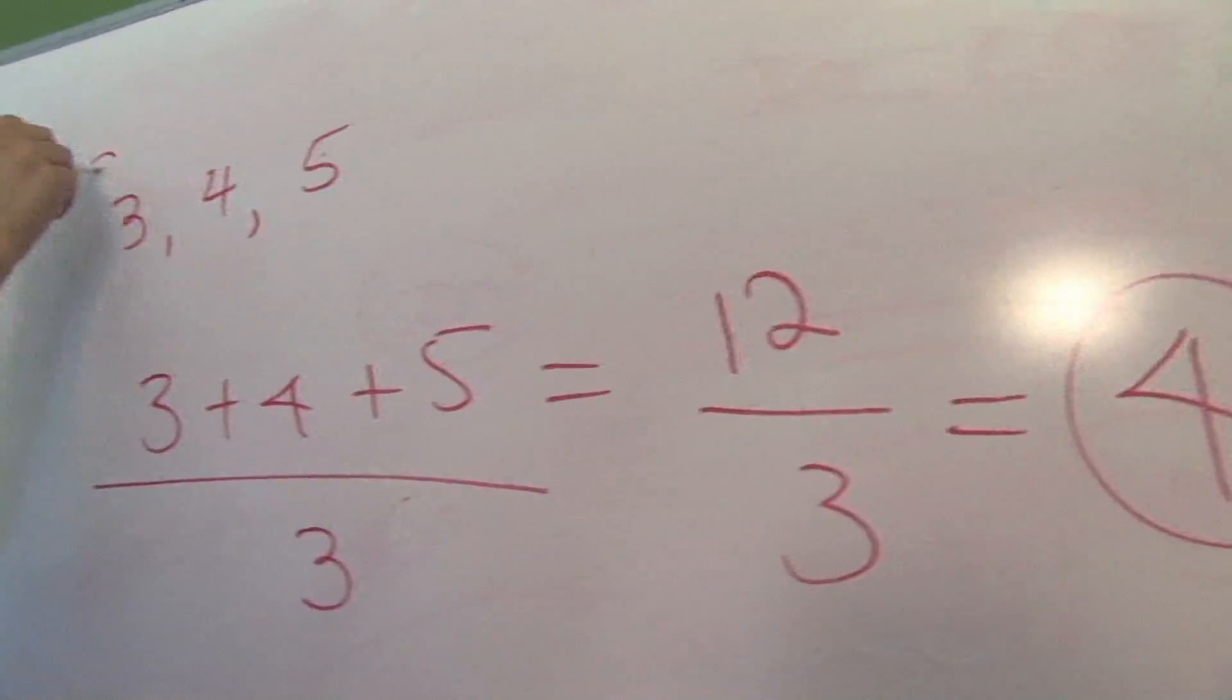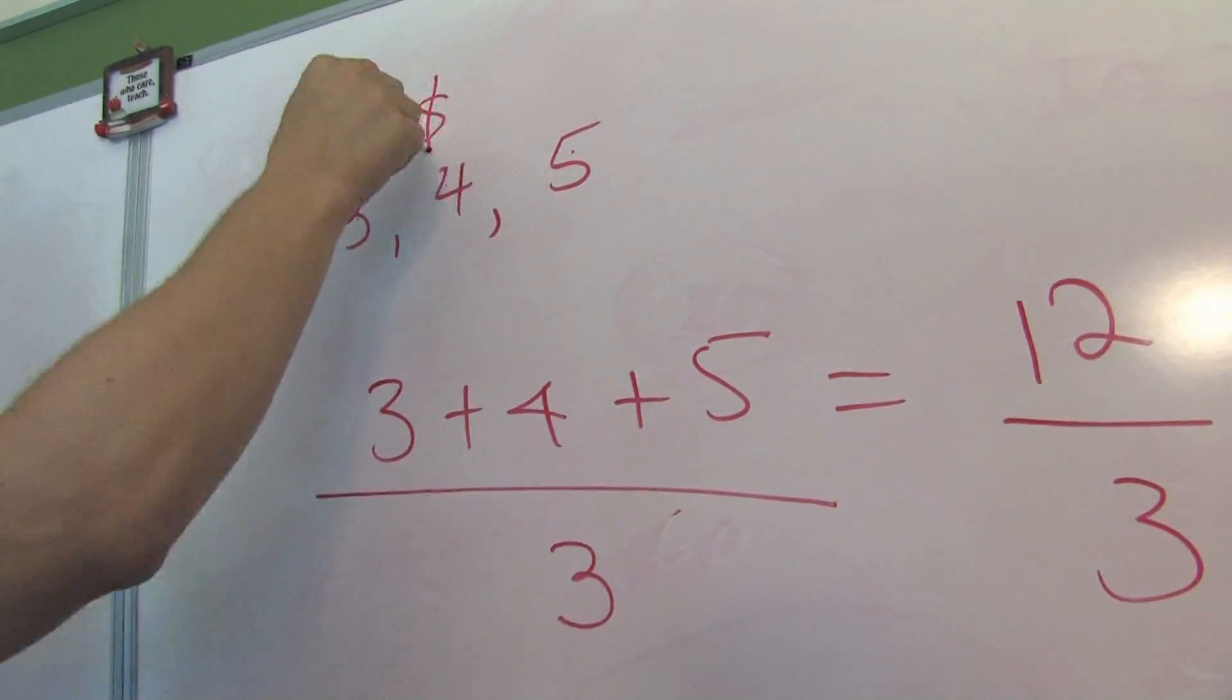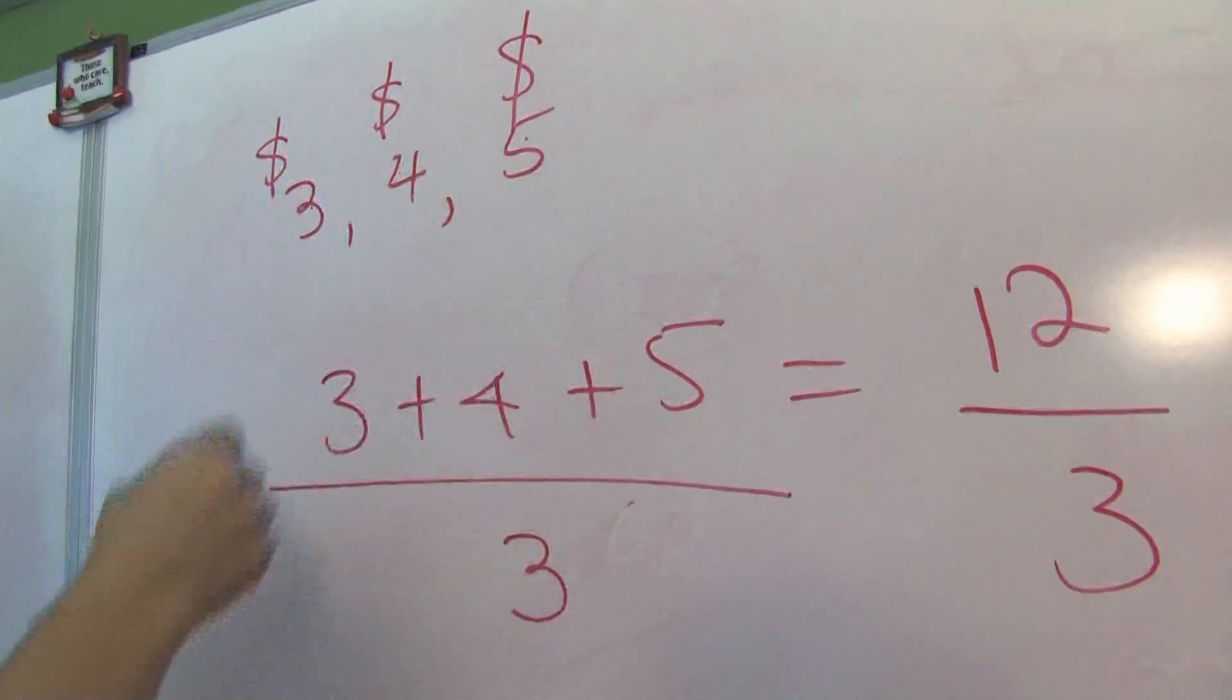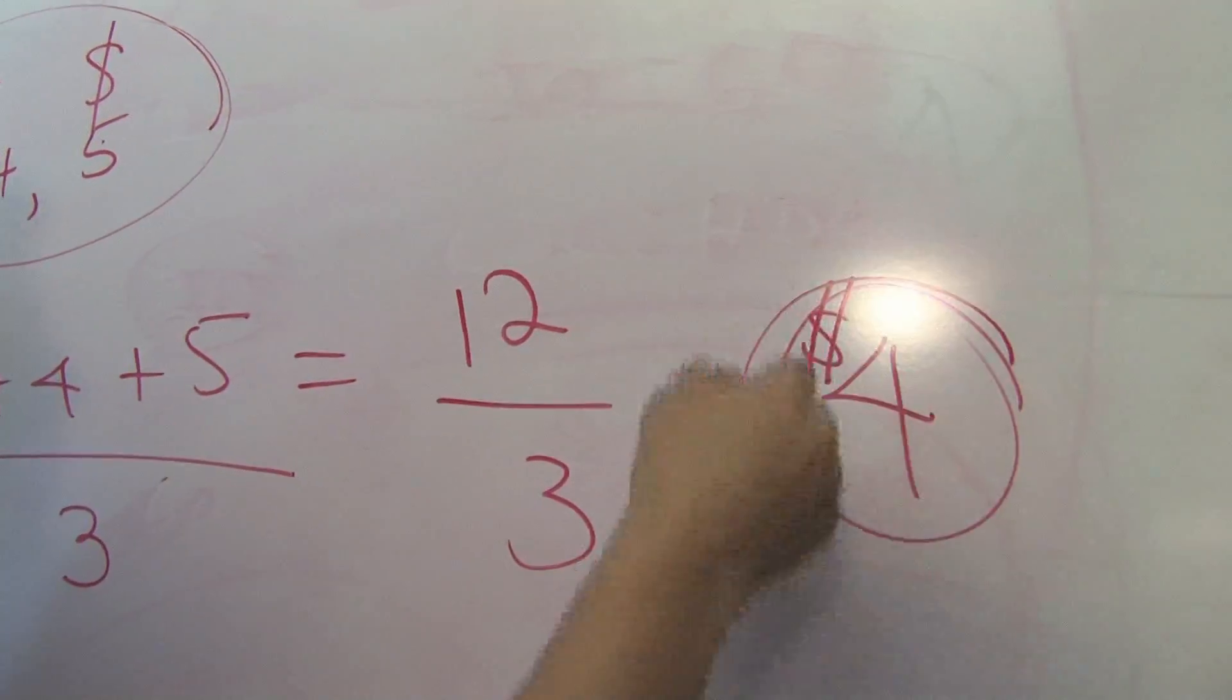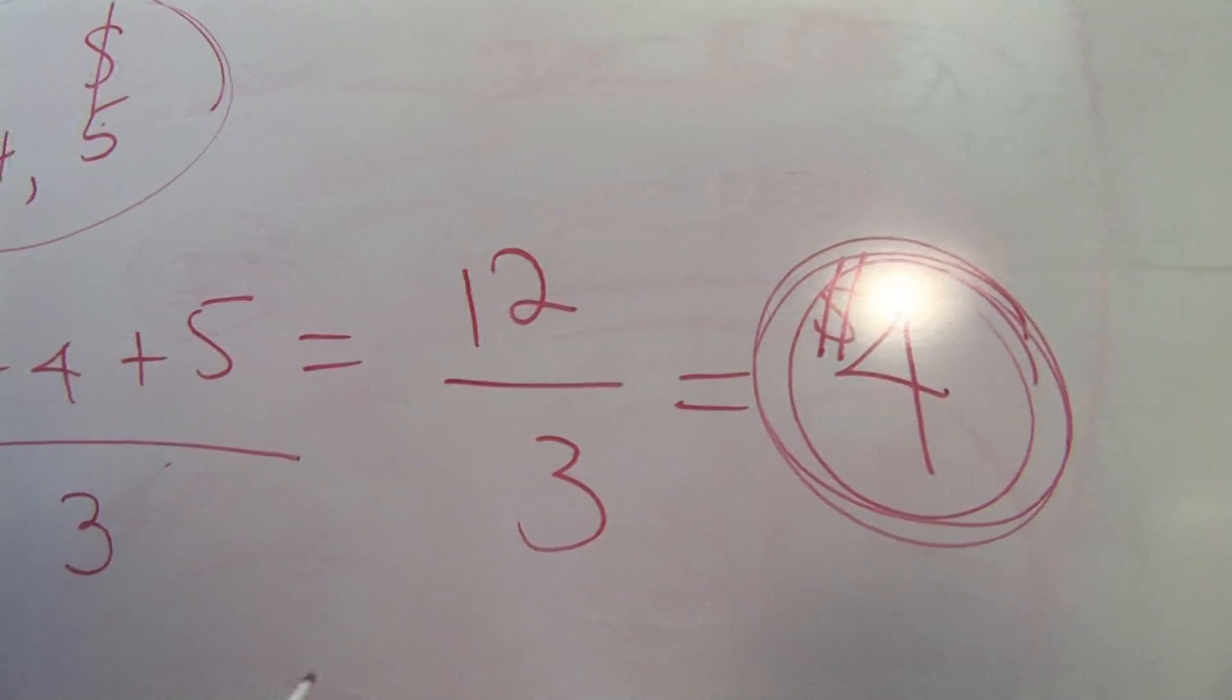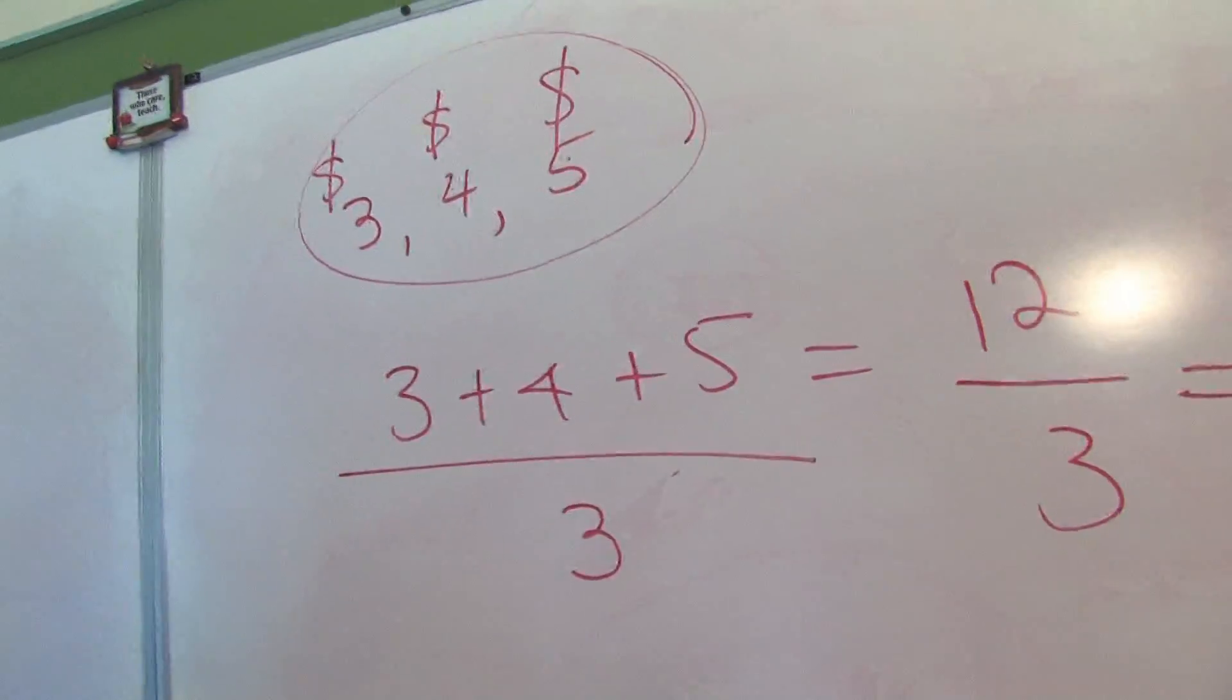So if you spend an average of $3 one day, $4 the next day, $5 the next day, over those 3 days, you have spent an average of $4. Usually when you think about money, math becomes a little easier, believe it or not.